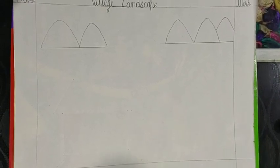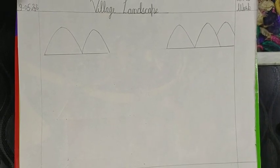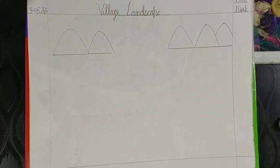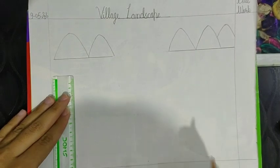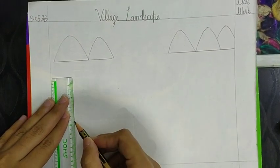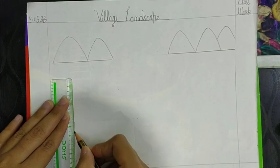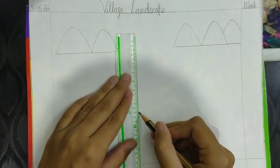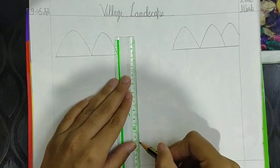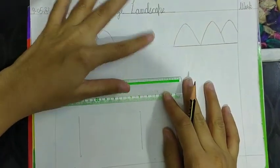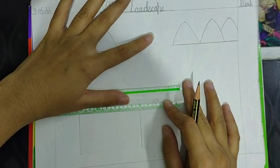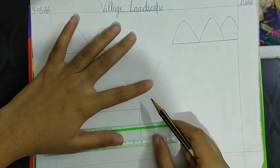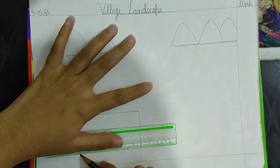Now after making the mountains, we will make a hut. For making a hut, you have to make a rectangle with scale. Take your time. There is no need to hurry. You have plenty of time. But your drawing should be neat and clean.